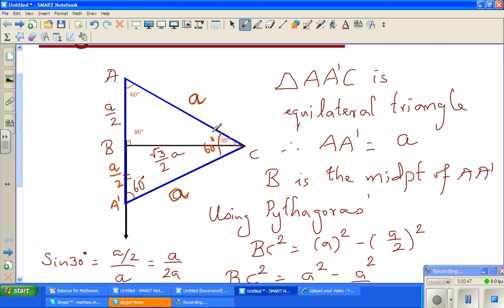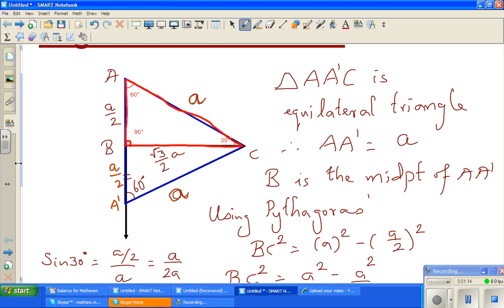Now sin 30°—we are looking at triangle ABC. Focus is triangle ABC where angle B is the right angle. This AB is A/2, this is A, and this is √3/2 times A.